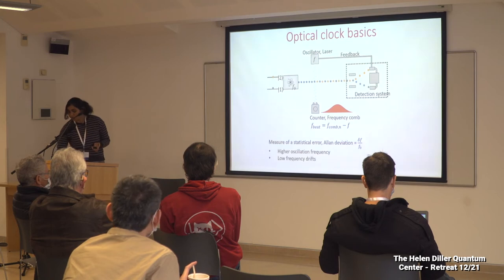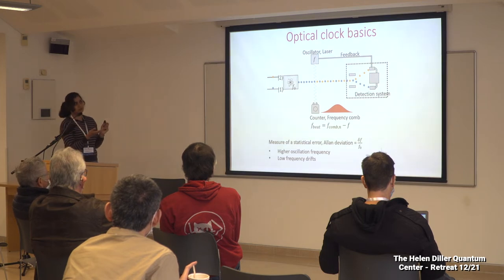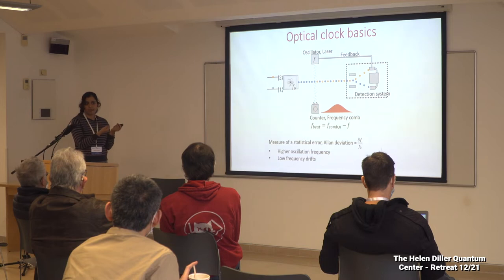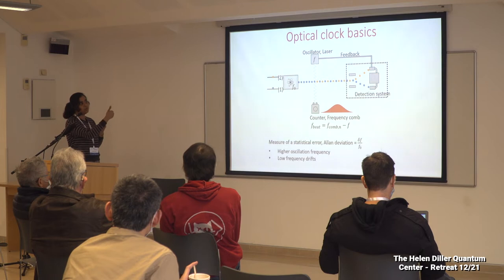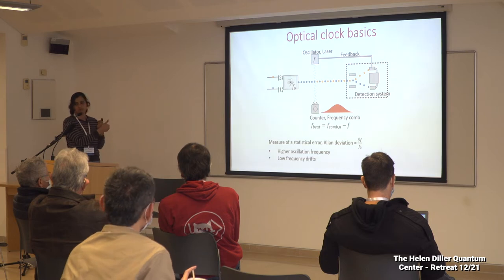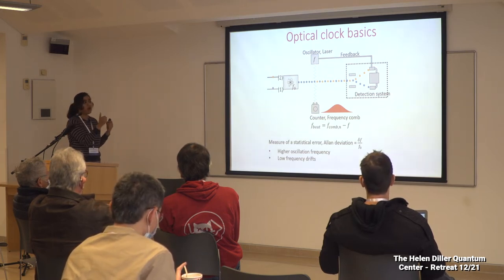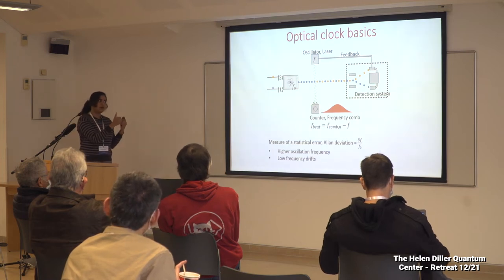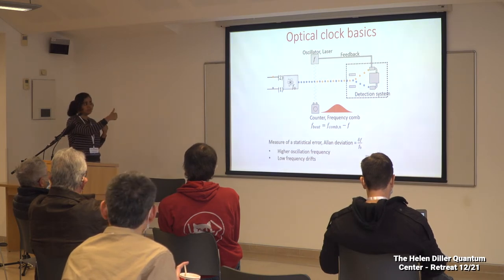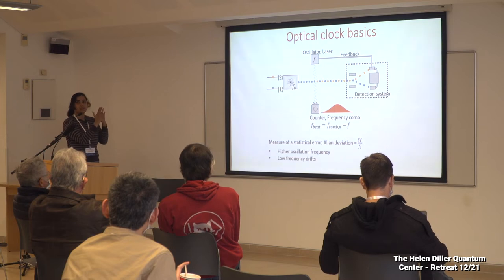How can we build an optical clock with this? To build any clock we need an oscillator — for an optical clock we use a laser directly. Then we need a frequency standard, which in our case are atoms, because atoms are less disturbed by the environment. Depending on how well the laser frequency is tuned to the atom's natural frequency, the atoms make a transition from one quantum state to another. We measure how many atoms made this transfer and apply feedback to the laser frequency so it stays tuned to F0.